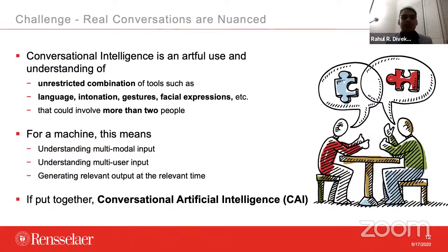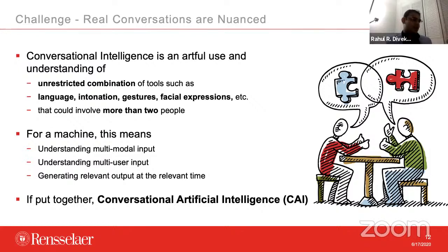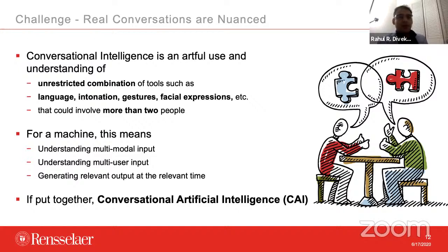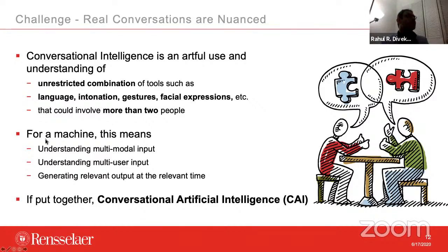A modality is, for example, speech as one modality and gesture as another. Second, it needs to understand multi-user input. When we talk to Siri or Alexa, it's usually a one-on-one conversation, and the bot is designed as such — it does not consider that there may be more than one user. Then there is generating relevant output at the relevant time. These bots want to behave like humans — they're not just sitting waiting for someone to say 'turn on the light.' They want to proactively come talk to you. These things put together are called conversational artificial intelligence.